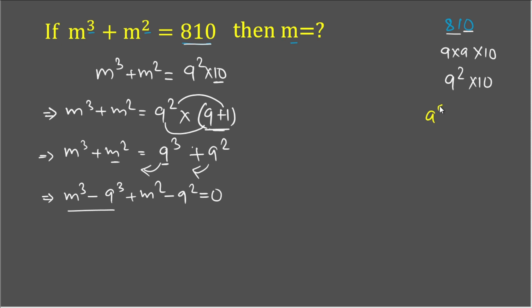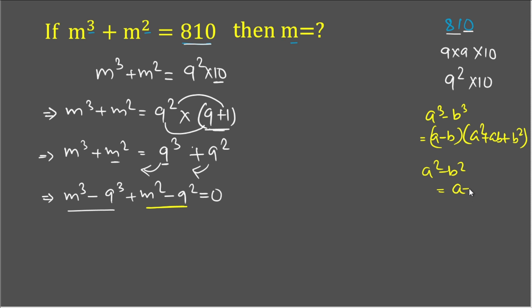Now we have m³ - 9³, which is in the form a³ - b³. The formula is (a - b)(a² + ab + b²). We also have m² - 9², which is in the form a² - b². The formula is (a + b)(a - b). Here a = m and b = 9.